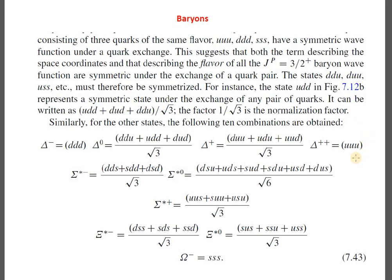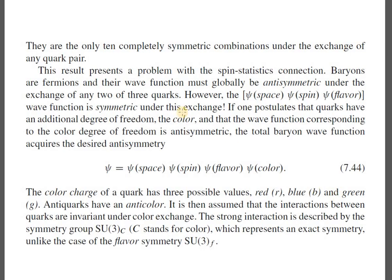Similarly for other cases, the following 10 combinations are obtained. You can do this following my previous lectures, where I have already discussed how to write the delta-plus or delta-plus-plus wave function. For the sake of completeness I have written all the cases here. There are only 10 completely symmetric combinations under the exchange of any quark pair. This result presents a problem with the spin-statistics theorem — baryons are fermions and their wave function must be globally anti-symmetric under the exchange of any two of three quarks.